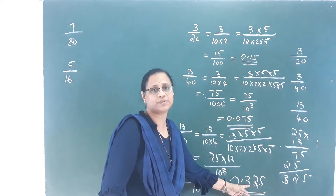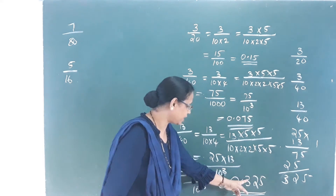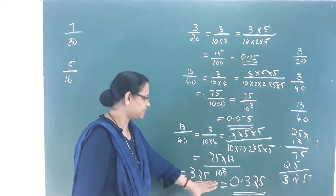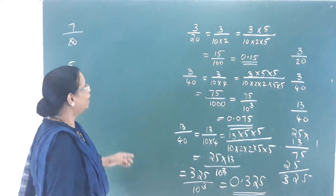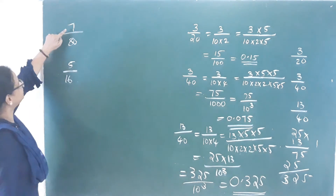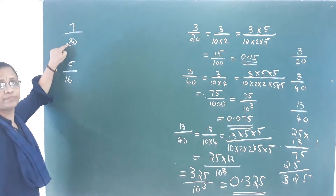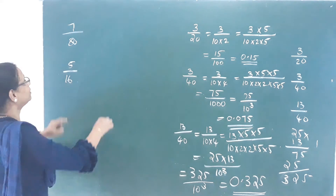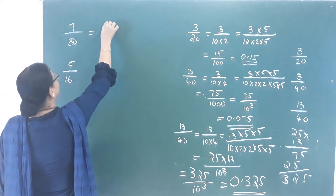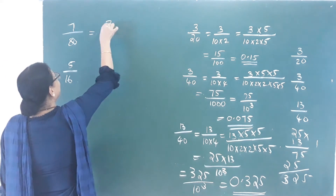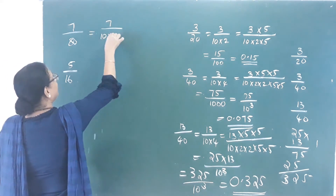Make decimal links: 1, 2, 3 places — 0.325. Next question: 7 by 80. We have 7 by 80, which is 7 by 10 into 8.